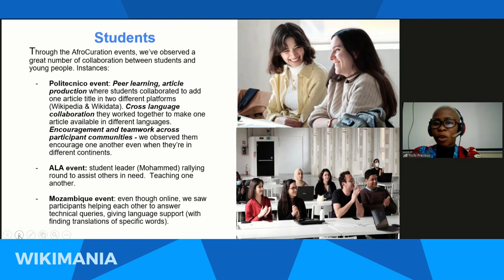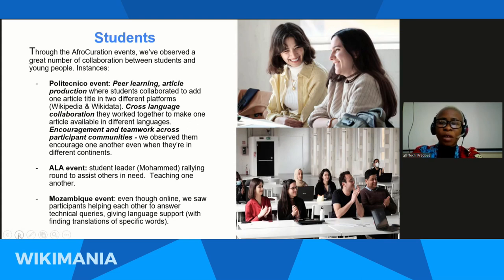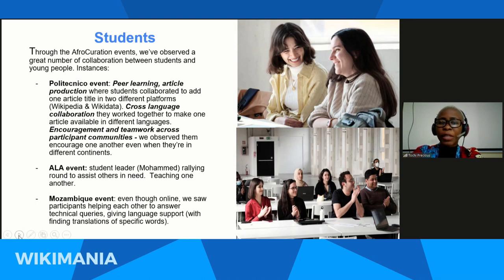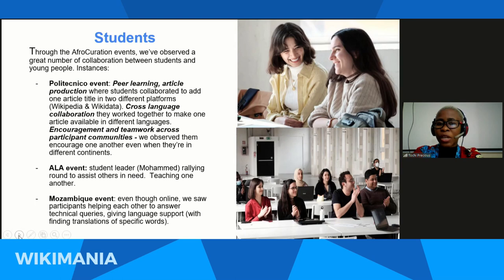Through Afro-Curation events, we observed a great number of collaborations between students and young people. In the Polytechnico event, we had peer learning — examples of article productions where students collaborated to add one article title on two different platforms. For example, an article on Chimamanda Adichie was written in a particular language on Wikipedia and also on Wikidata. There was also cross-language collaboration where they worked together to make one article available in different languages.